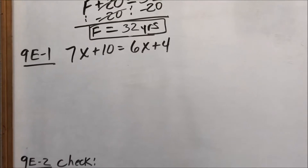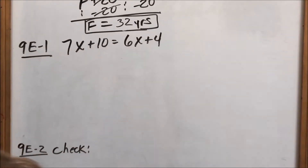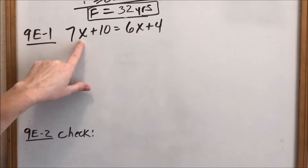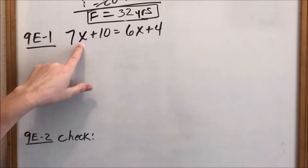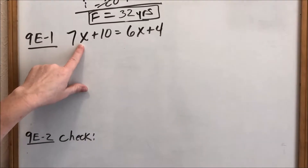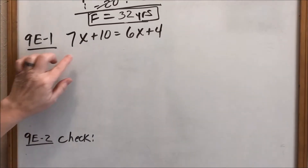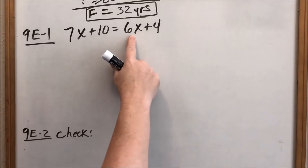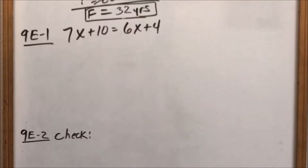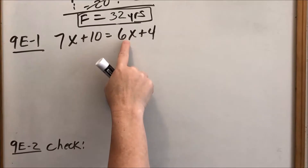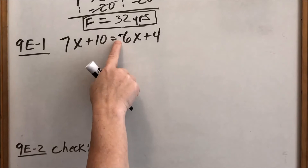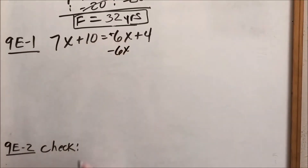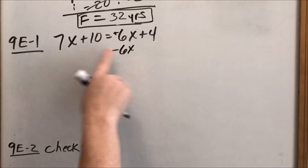Let's go to 9E number one. What if we have letters and numbers on both sides of the equal sign? Here we have 7X plus 10. You cannot add X's to numbers — you can only add X's to X's and numbers to numbers. Our goal is to get letters on the left-hand side, which means I don't want the X on the right. I normally do letters first. So if I want letters on the left, this is an implied positive, and to get it to go away I subtract it — doing the opposite of addition.